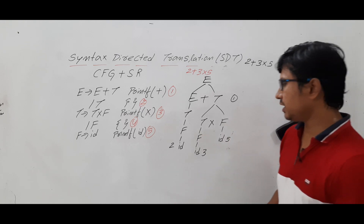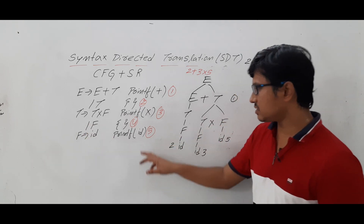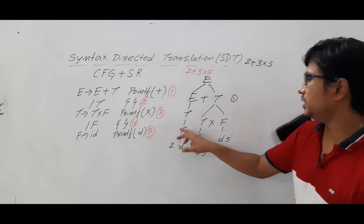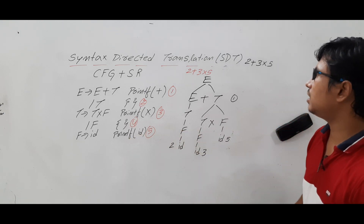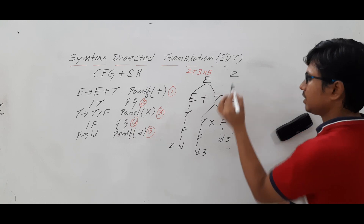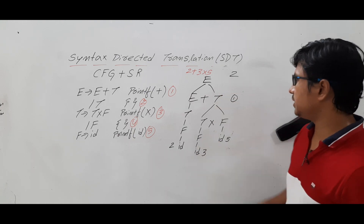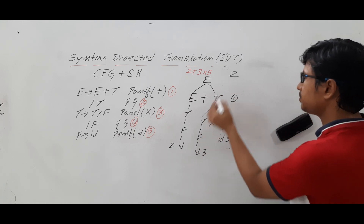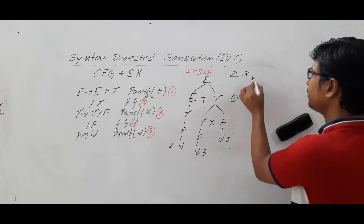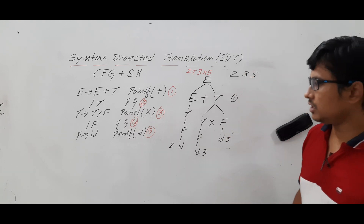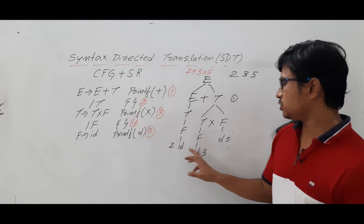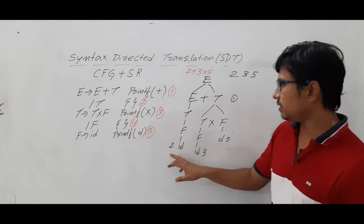F determines ID — the semantic rule says print of ID, so you print the value 2. Similarly, you print the value 3, and here you print the value 5. So you have printed all the IDs: 2, 3, 5.